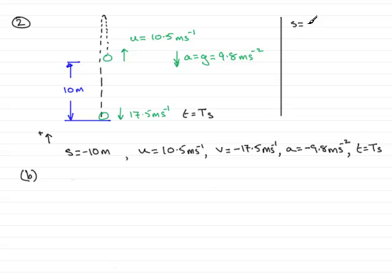We could use s equals ut plus a half at squared. We know s, we know u now, and we know a, so we could find T. We could also use s equals u plus v multiplied by T, all divided by 2. And we could also use v equals u plus at.